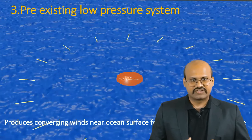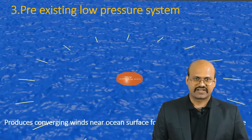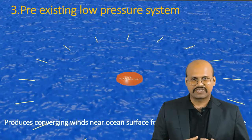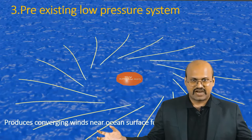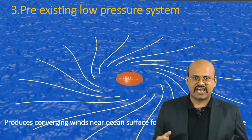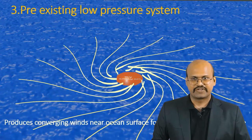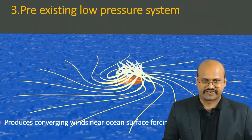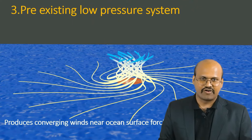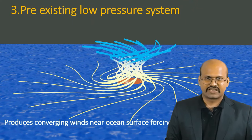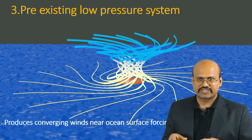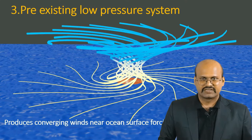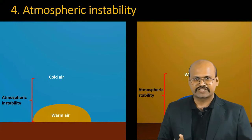There must be a pre-existing low pressure area for cyclones to form, because this low pressure area attracts air from all directions, producing a converging wind system near the surface which is essential for cyclone formation. Additionally, there must be atmospheric instability.